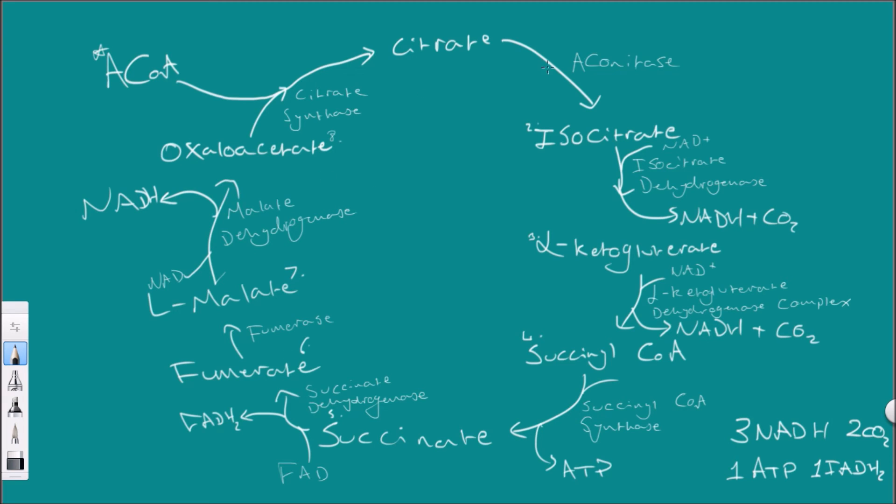And there is our Krebs cycle. Quickly run through it again. The acetyl coenzyme A from the link reaction, we have our pyruvate come in, convert to that with our PDH complex, I'll cover that in a different video. Convert the pyruvate into acetyl coenzyme A. The acetyl coenzyme A combines with oxaloacetate. They then use the enzyme citrate synthase to synthesize citrate. The citrate is converted by an isomerization reaction into isocitrate using aconitase.